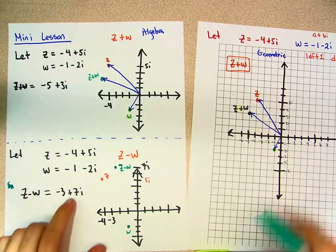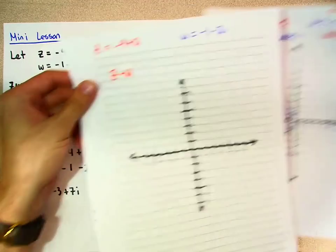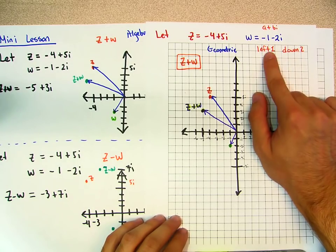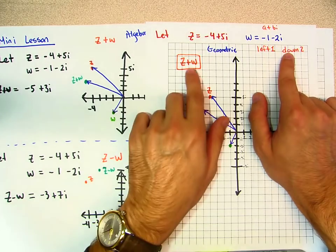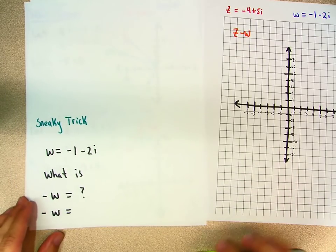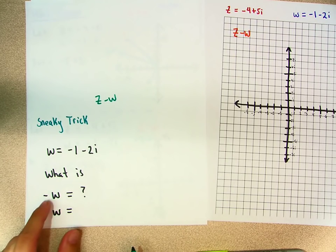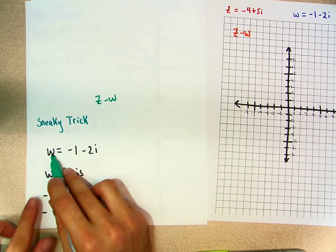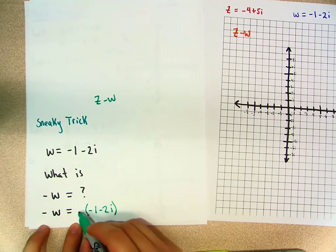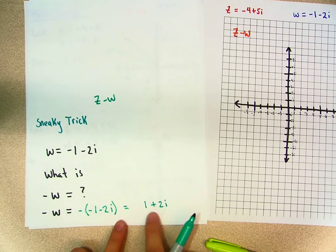Now let's try and do this geometric trick with z minus w. We need to employ a little trick. Because I said left 1, down 2, but it won't make sense because this is a minus and we want plus. Sneaky trick by Mr. G — if w is equal to negative 1 minus 2i, what is negative w? If I put a negative on the outside, I have 1 plus 2i. And notice that we can take this little trick with us.